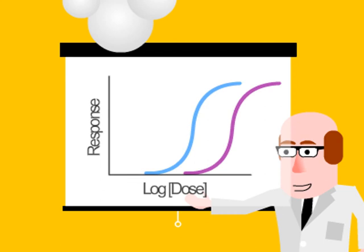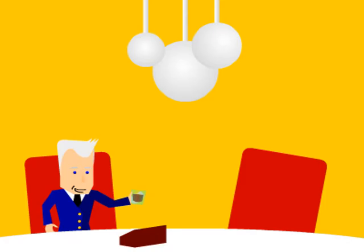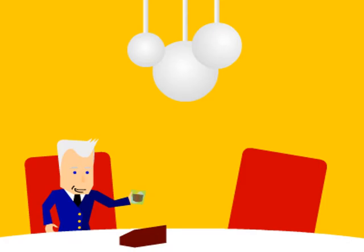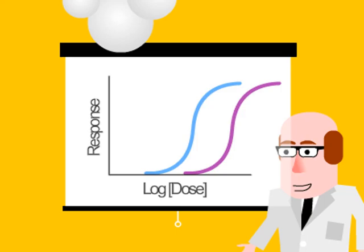That curves much further to the right than the original. Yes, that's our competitive antagonist, snapactim. While it blocks retrofan from binding, it doesn't make it impossible. With a high enough dose of retrofan, we can start to achieve the same effects as before. So it's made it less potent, and that's why it's shifted to the right? Exactly.